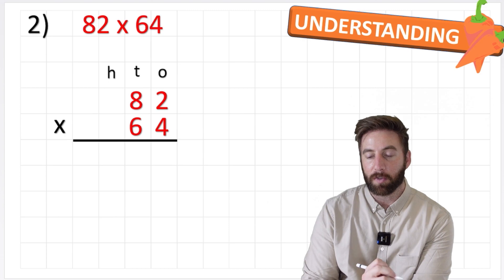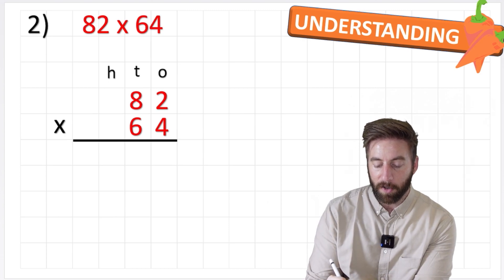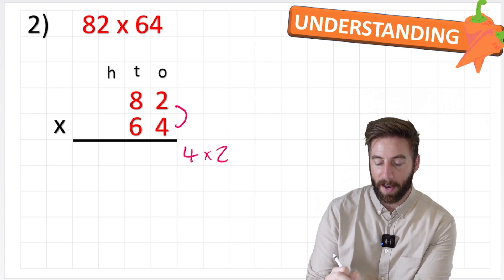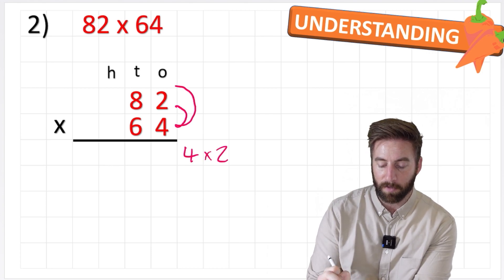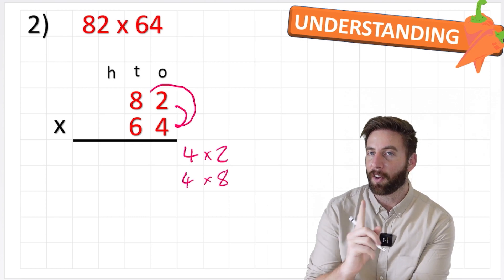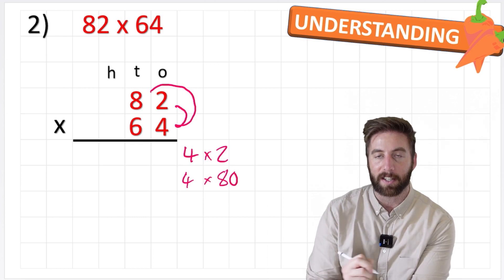Okay, so let's remind ourselves, where do we start? Well, we start at our smallest value. So my first one's going to be 4 times 2. And then I start moving to the next smallest value. 4 times 8. Not an 8, is it? We know it's an 80 because it's in the 10s column.